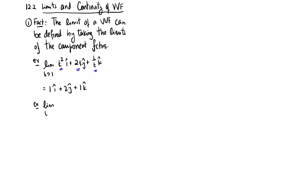So if we had something like the limit as t goes to 0 of sine t over t i plus tj plus e to the t plus 1k, that first limit, sine t over t, is the limit you may remember from Calc 1. And then we have a t here and an e to the t plus 1 here. Those second two are continuous. So the limit as t goes to 0, sine t over t is 1i plus 0j plus e to the 1 is ek.